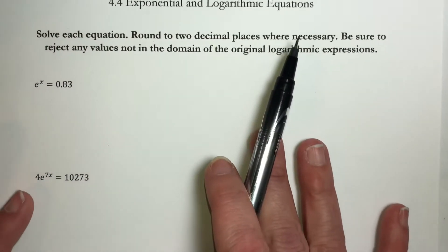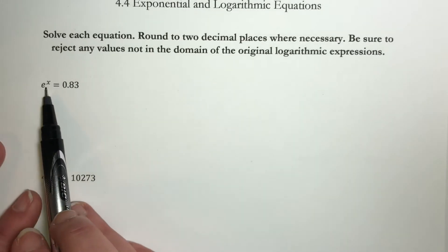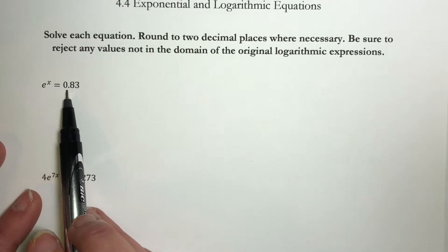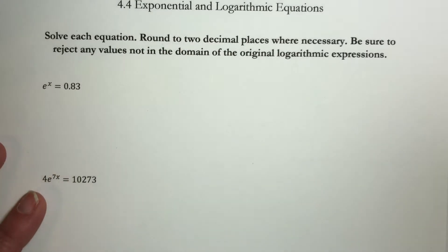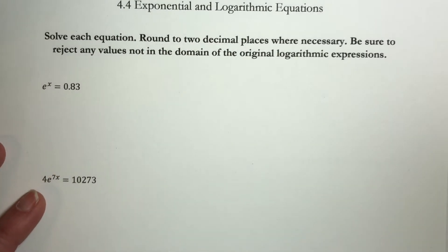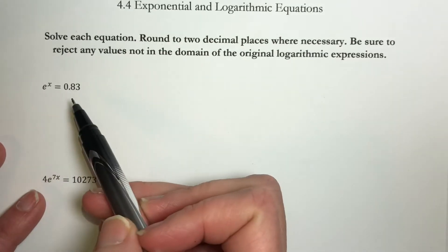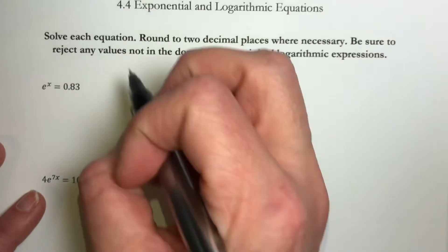Let's start off with this first problem. e^x = 0.83. We need to get this x out of the exponent. To do that, we are going to take a natural log of both sides. Why natural log?